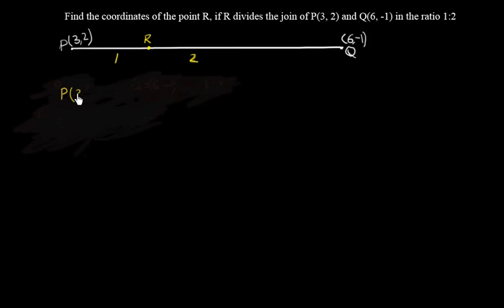So here the point P is (3,2) and Q(6,-1), and R, that means here we have to find R. Let's say R is (x,y) and the ratio is 1:2. So let's take that section formula here.